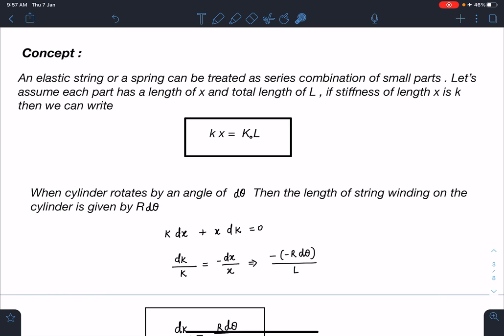As you can see, when we are rotating this cylinder by an angle dθ, the length of string winding on the cylinder will be given by R dθ. So R dθ is that small length which will be winding on the cylinder when the cylinder rotates by an angle dθ.